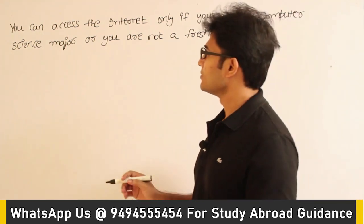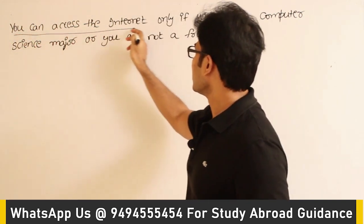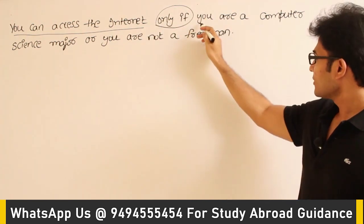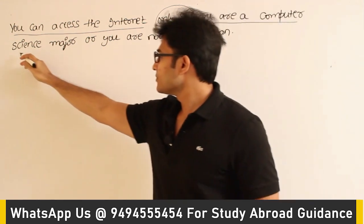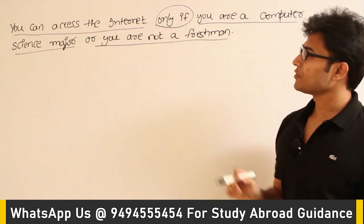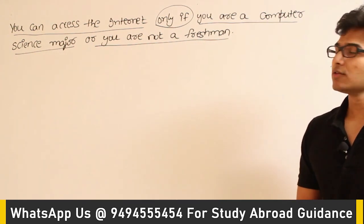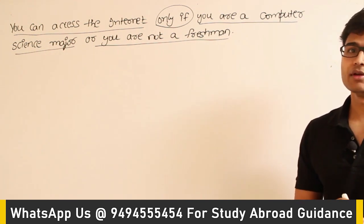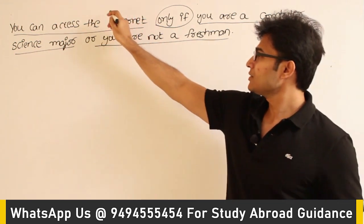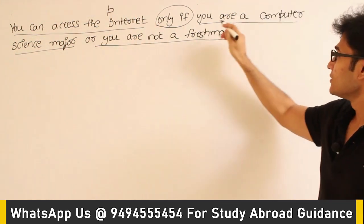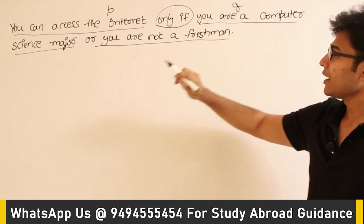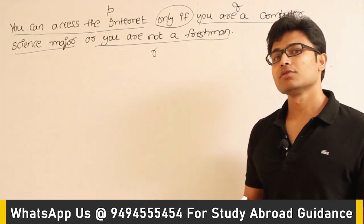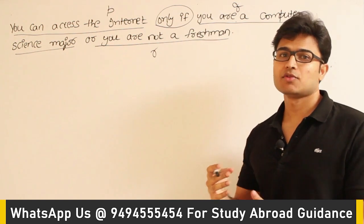Let's read this example — it is very straightforward. 'You can access the internet only if you are a computer science major or you are not a freshman.' There are three statements here, so it is better to use three variables. The options will typically tell you: this is one statement, call it P; this is another, call it Q; and this is another, call it R. Then you are supposed to express it in terms of logic.